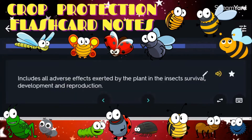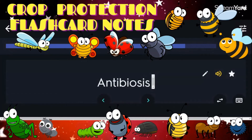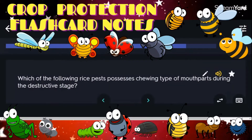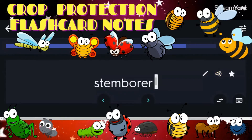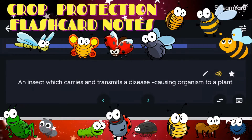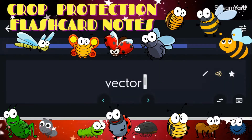Includes all adverse effects exerted by the plant on the insect's survival, development, and reproduction: Antibiosis. Which of the following rice pests possesses chewing type mouthparts during the destructive stage? Stemborers. An insect which carries and transmits a disease-causing organism to a plant: Vector.